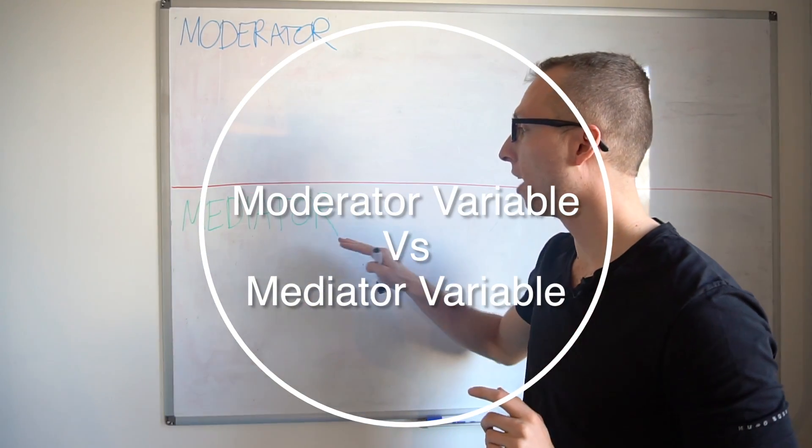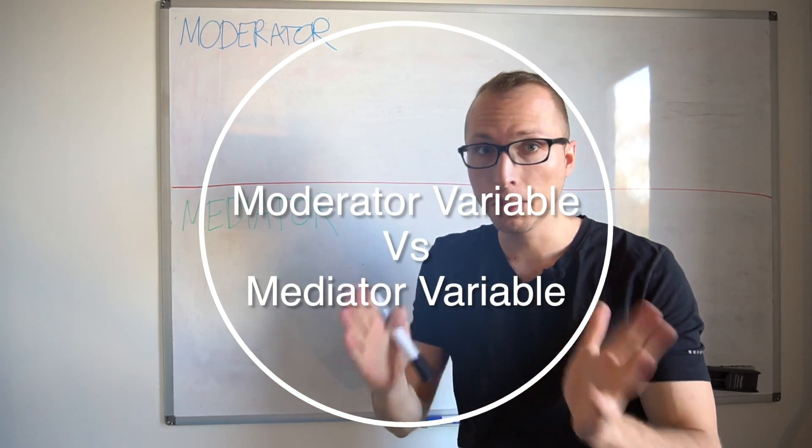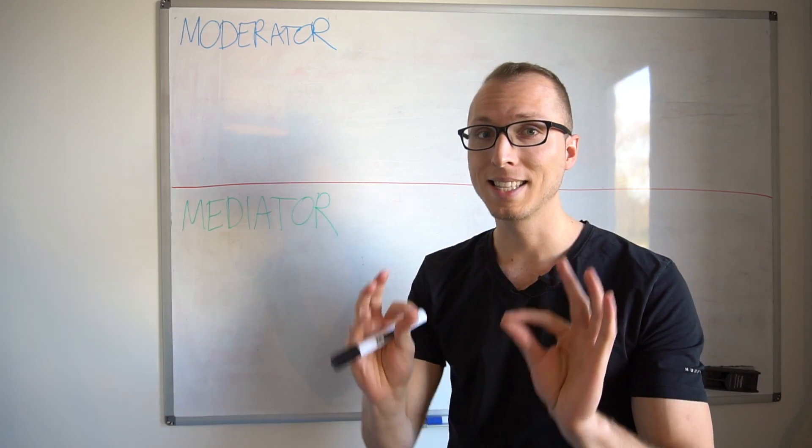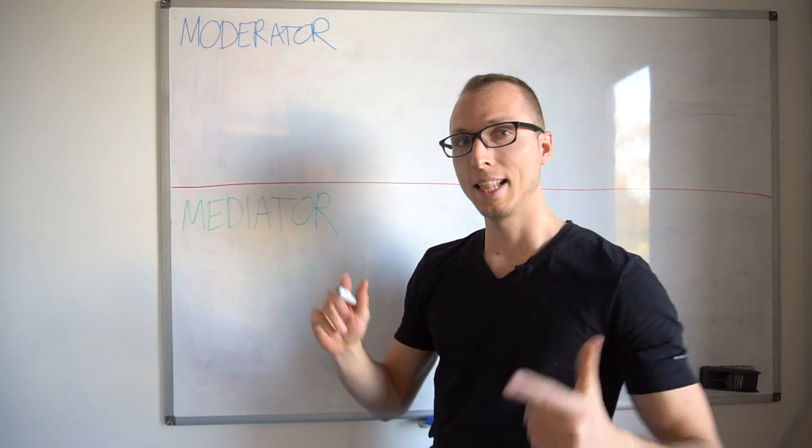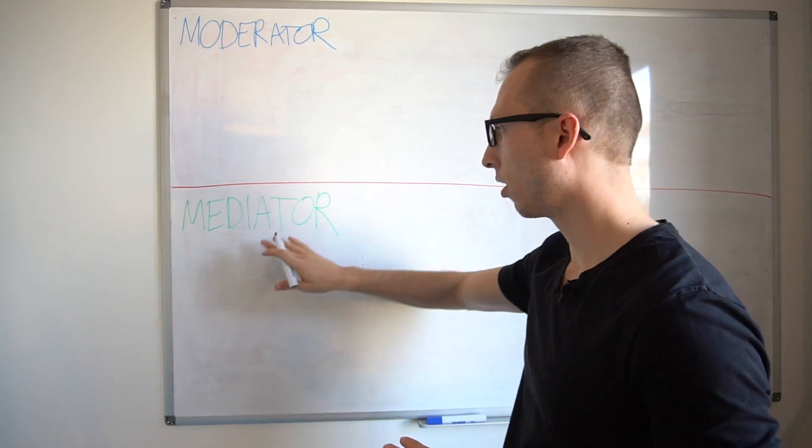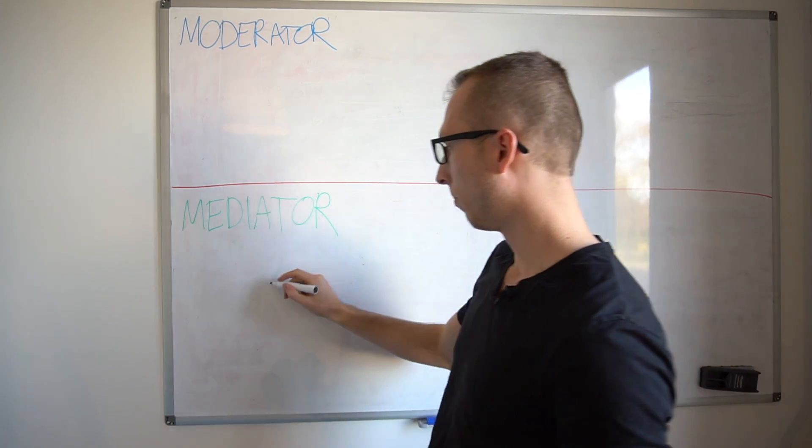What is the difference between a moderator and a mediator variable? It seems like just a small one, but actually it's a very important one. Let's understand this with an example, and let's start with the mediator variable.